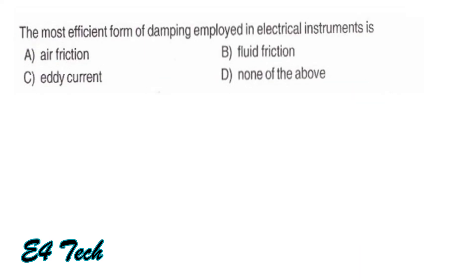The most efficient form of damping employed in electrical instruments is eddy current damping. It is the most efficient and most commonly used type of damping system. That is option C.